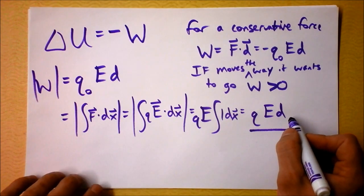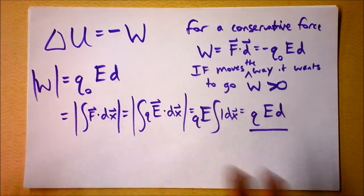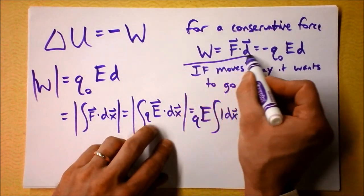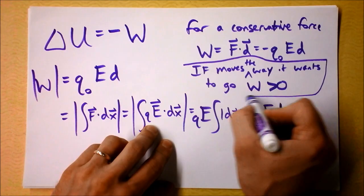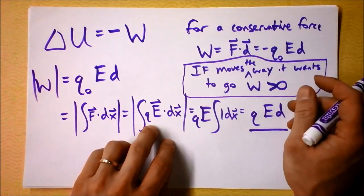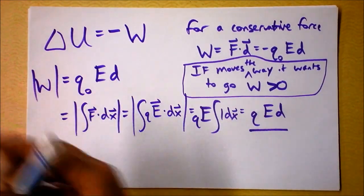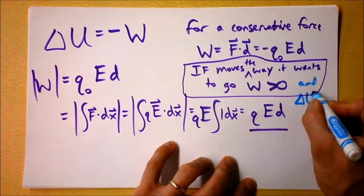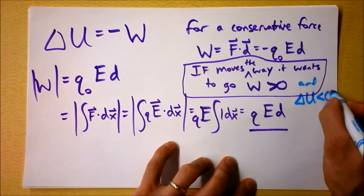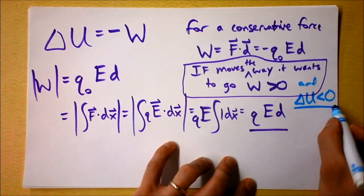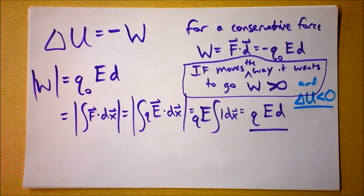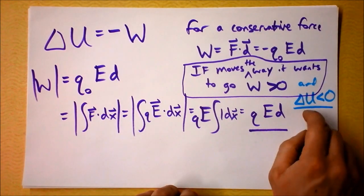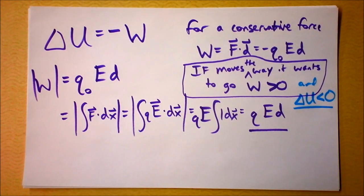Work is equal to the change in potential energy. There's a minus sign, but don't concern yourself with that, because if something moves the way it wants to go, the field has done positive work on it. And if something moves the way that it wants to go, its change in electric potential energy is negative — it has lost potential energy.